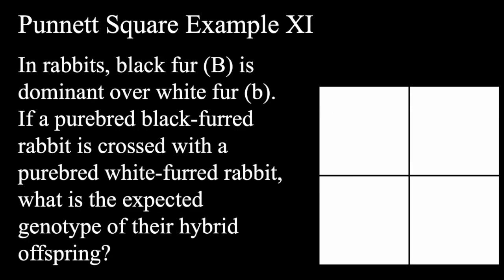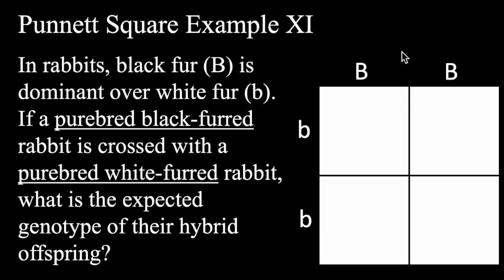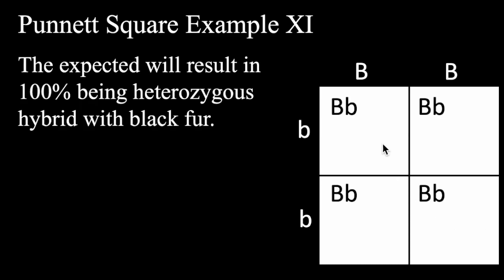The last question: in rabbits, black fur is dominant to white fur. If a purebred black fur rabbit is crossed with a purebred white fur rabbit, what is the expected genotype of their hybrid offspring? You have to know that purebred correlates with homozygous — purebred dominant correlates with homozygous dominant, and purebred recessive correlates with homozygous recessive, meaning two of the same alleles. The purebred black fur parent is dominant with two uppercase letters, and the white fur parent is recessive with two lowercase letters. Making the cross results in 100% heterozygous offspring. Every single time purebred parents are crossed, this is the result.